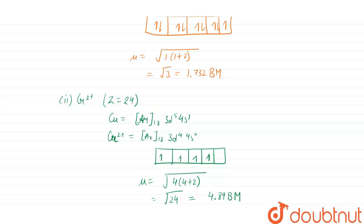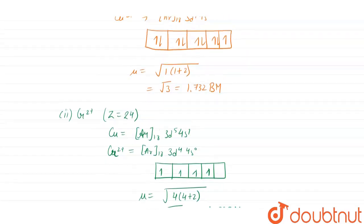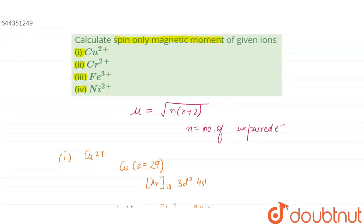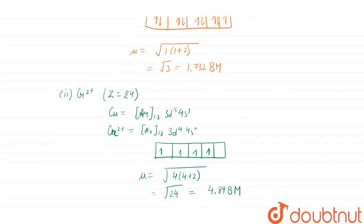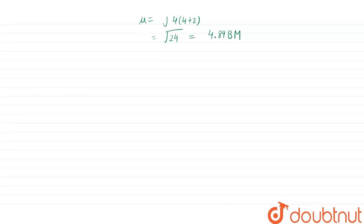Now, moving on to the third one, that is Fe³⁺. We know that iron has an atomic number equals to 26 and iron has electronic configuration as [Ar]₁₈ 3d⁶ 4s².